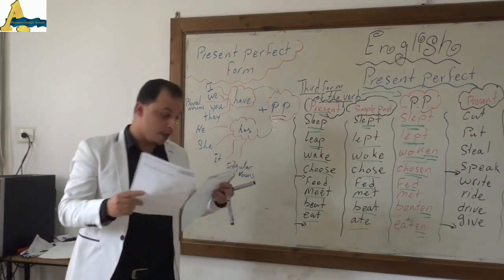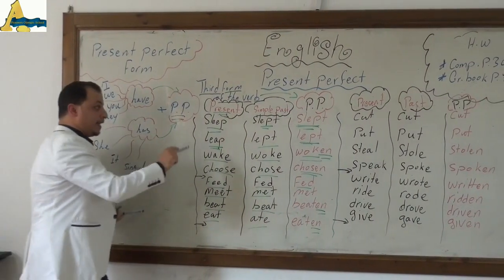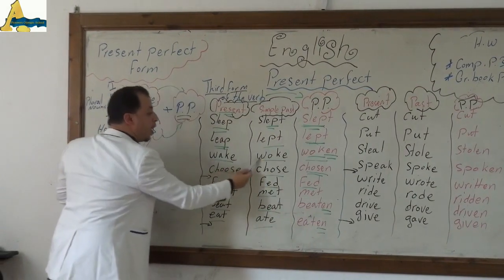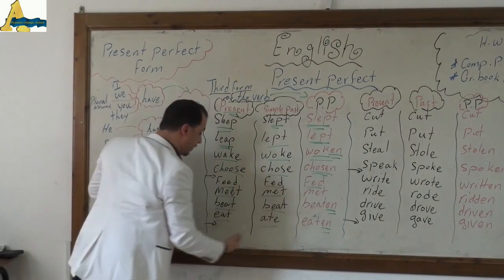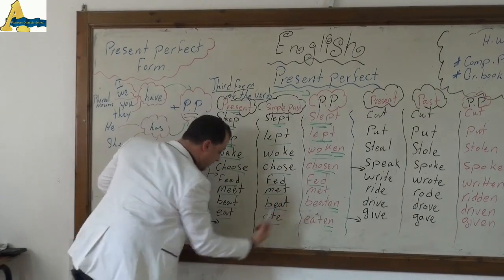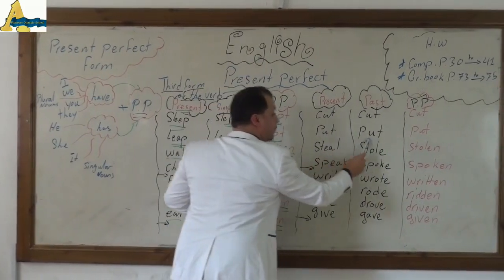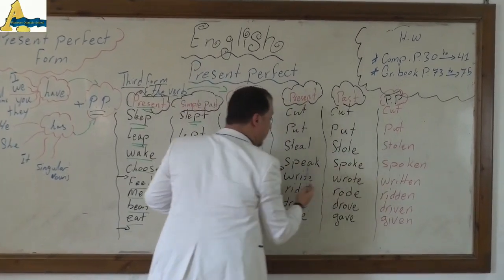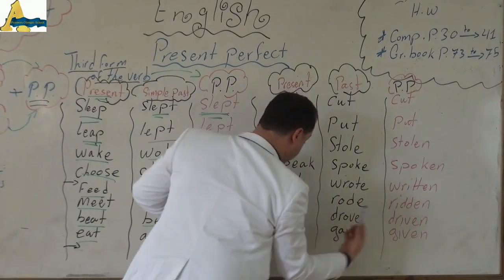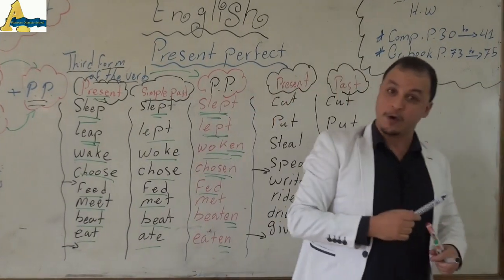It's going to be perfect for you. Say it with me again: sleep, slept, slept. Leap, leapt, leapt. Wake, woke, woken. Choose, chose, chosen. Feel, felt, felt. Meet, met, met. Beat, beat, beaten. Eat, ate, eaten. Cut, cut, cut. Put, put, put. Steal, stole, stolen. Speak, spoke, spoken. Write, wrote, written. Ride, rode, ridden. Drive, drove, driven. Give, gave, given.